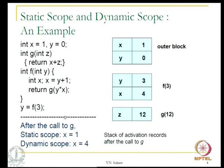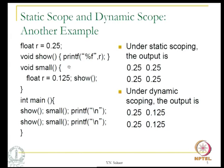Here is another example with a global variable r. The function 'small' has a local variable r whereas 'show' does not have any local variable declaration. When we print r, is it the global r or the local r? Under static scoping it is always the global r which is printed from 'show', whereas under dynamic scoping, since 'show' is called from within 'small', it is the local r from 'small' which will be used.